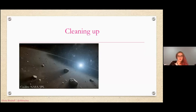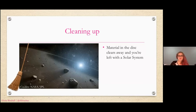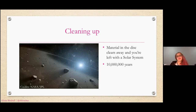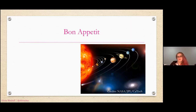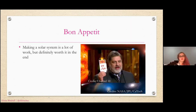At the end of making your solar system you've built all your planets and all your stars and it's time to clean up. You have all your leftovers, like in the asteroid belt as Jeff was saying earlier. Some stuff does clear away so you're left with the solar system — this takes about 10 million years, so like it actually does take forever. When you've done all that, you get to enjoy your solar system — it's definitely a lot of work but I think it's worth it. Our solar system deserves a 10 out of 10.